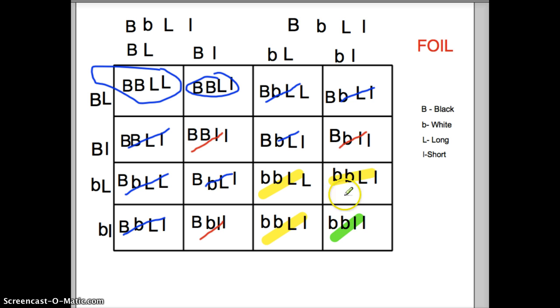So ratio-wise, nine out of 16 would be black and long. Three out of 16 would be black and short. Three out of 16 would be long and white. And only one out of 16 would be white and short. So you could do it this way. It's a di-hybrid Punnett square. Or you could actually do it this way, too.